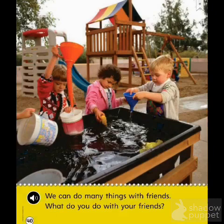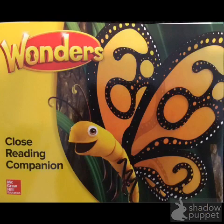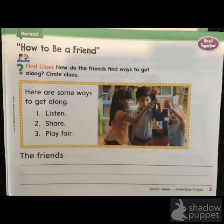We can do many things with friends. What do you do with your friends? We are going to find our skinny butterfly book now — the Wonders Reading Companion. You need your pencil to do this, and maybe some colored pencils too. We are going to start with our pencil and open to page number three. You should have a bookmark that holds the place of where you're going to be working.